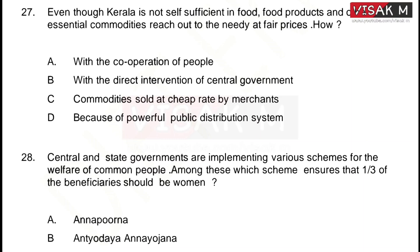Even though Kerala is not self-sufficient in food, food products and other essential commodities reach the needy at fair prices. How? The options are: A) With the cooperation of people, B) With the direct intervention of central government, C) Commodities sold at cheap rate by merchants, D) Because of powerful public distribution system. The answer is option D, because of Kerala's powerful public distribution system.